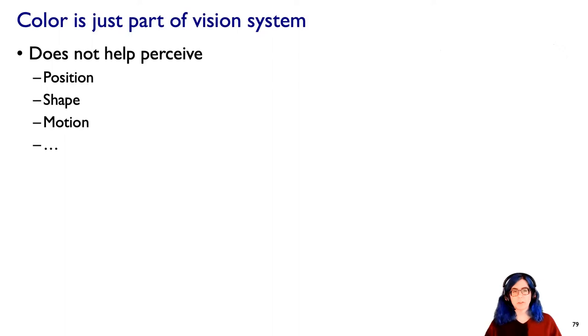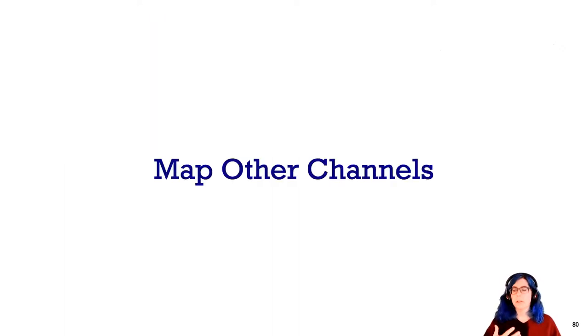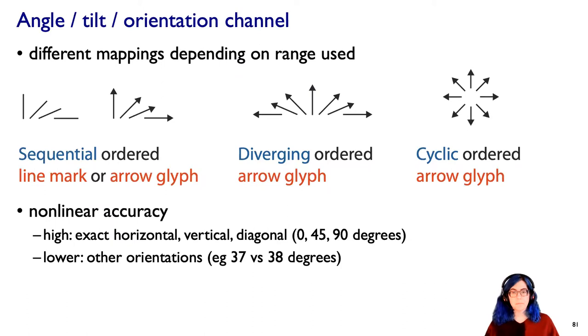So what about these other channels? I've been really focused on color, but let's now talk a little bit about the channels that are not spatial position and are not color. Angle is an interesting one, or tilt or orientation. These are all synonyms. What's great about angle is it sort of acts a bit like color in that you can get different mappings depending on the range. If you're going from zero to 90 degrees, then you can actually have the properties of sequential.